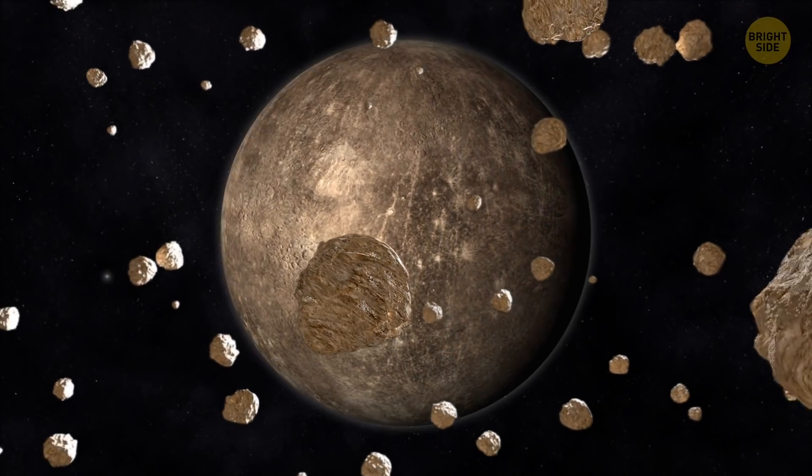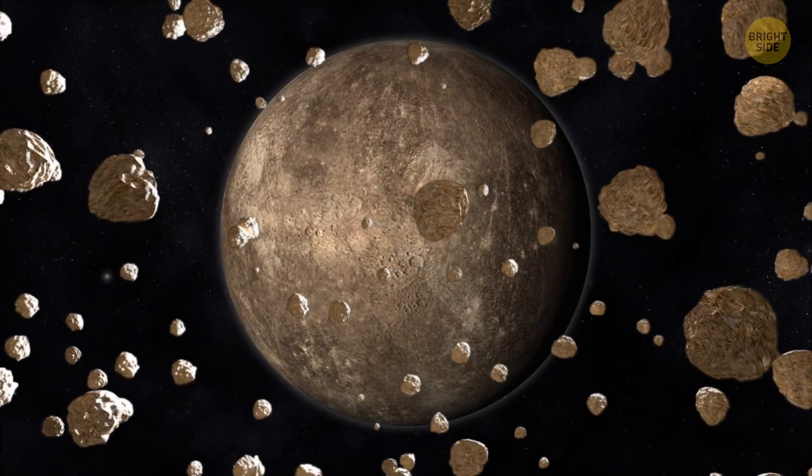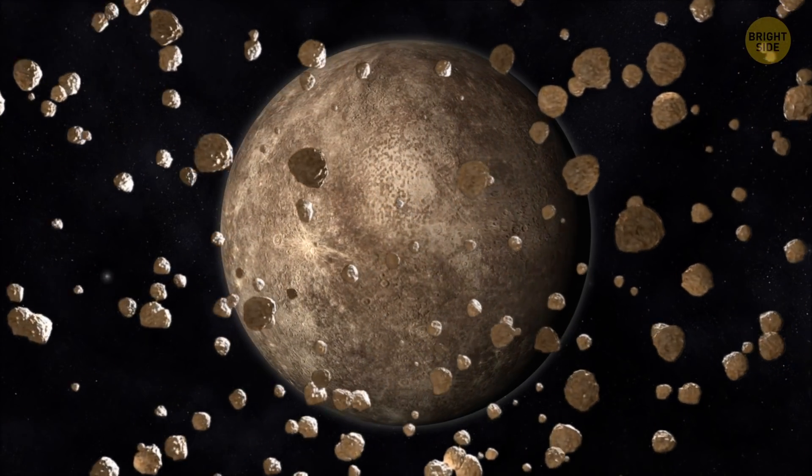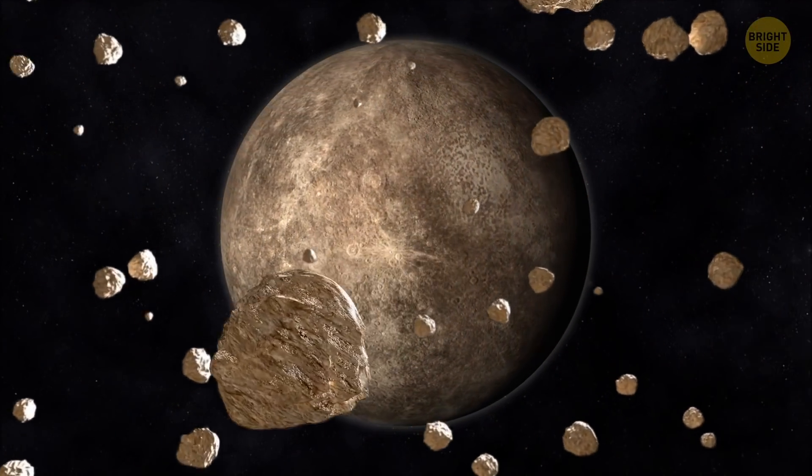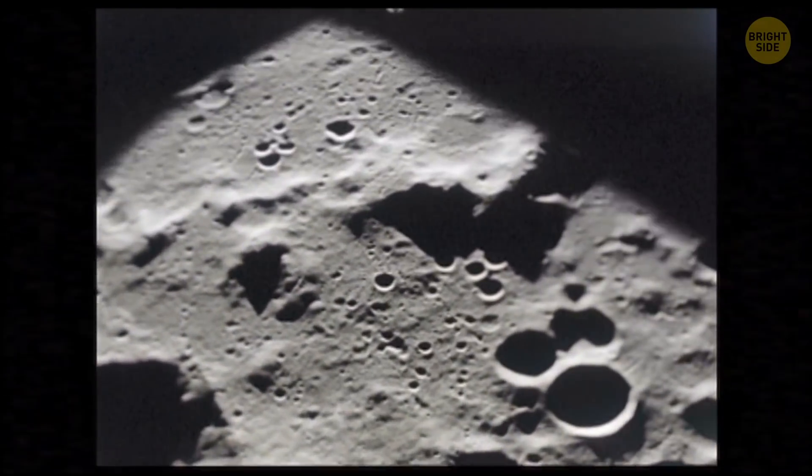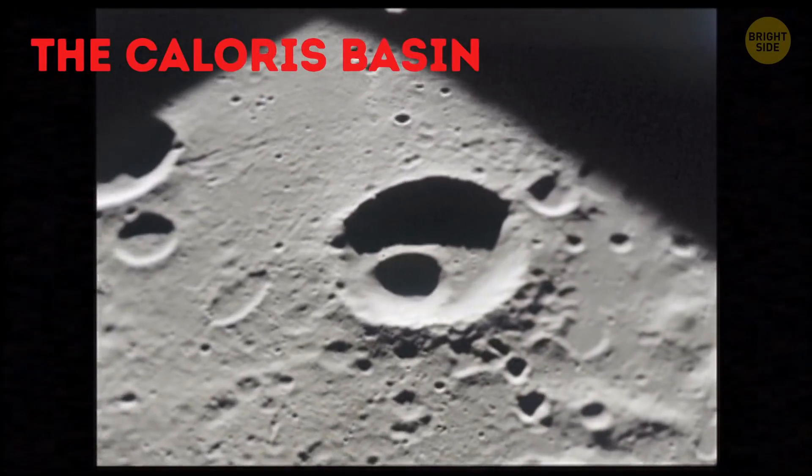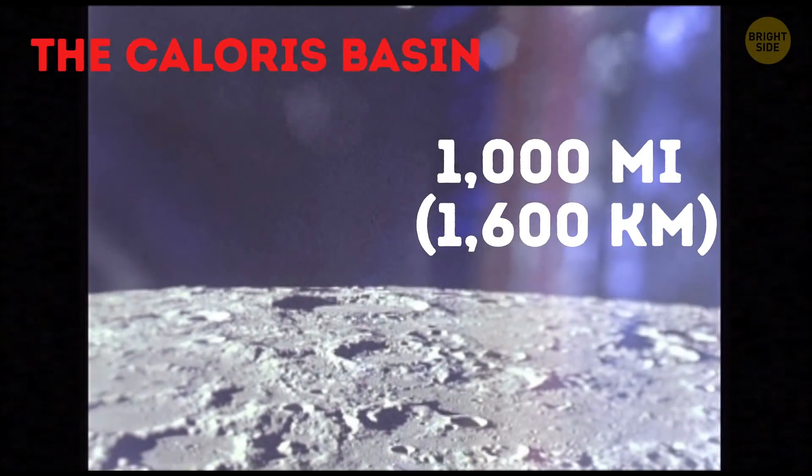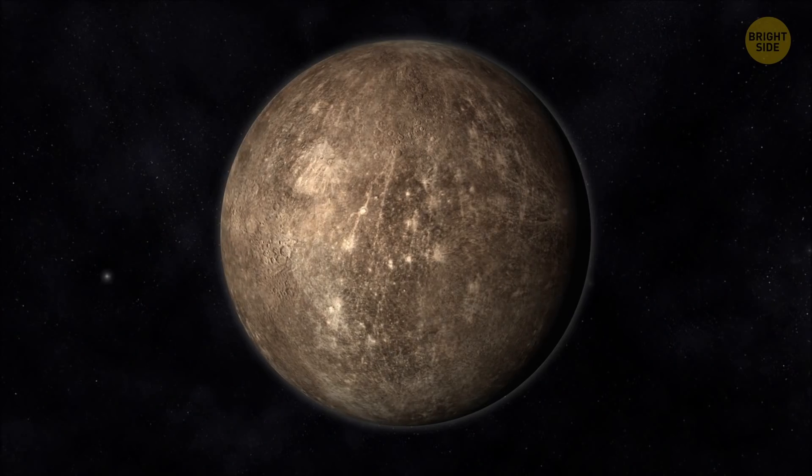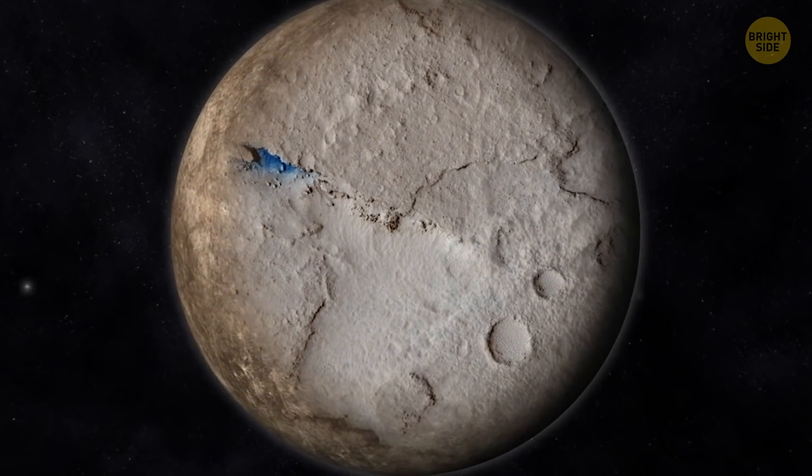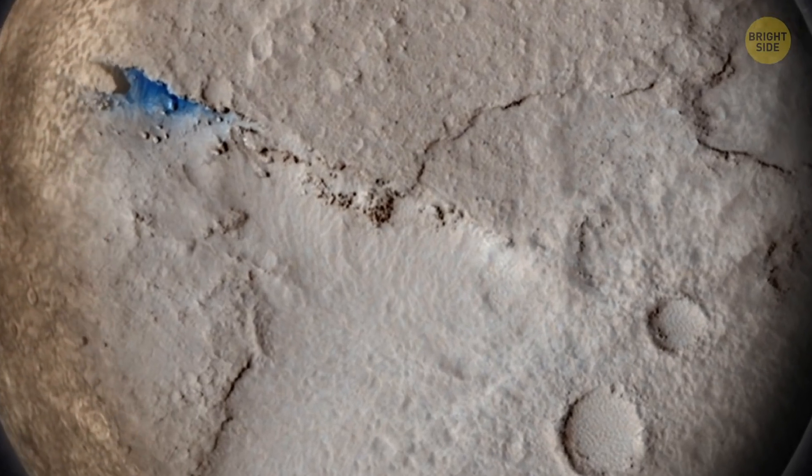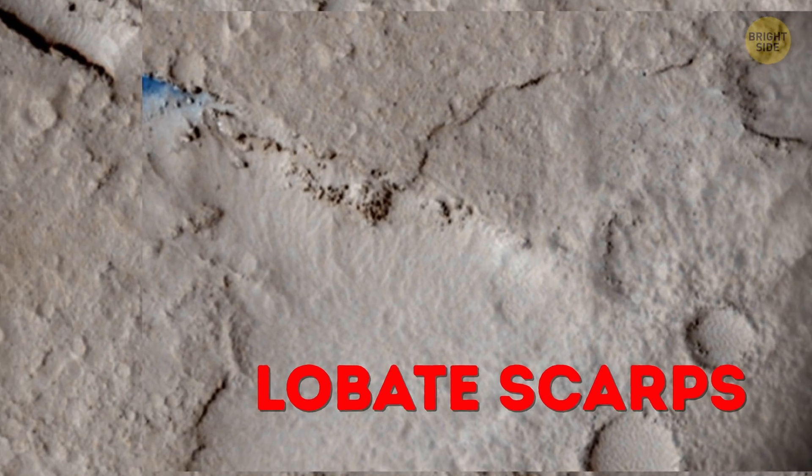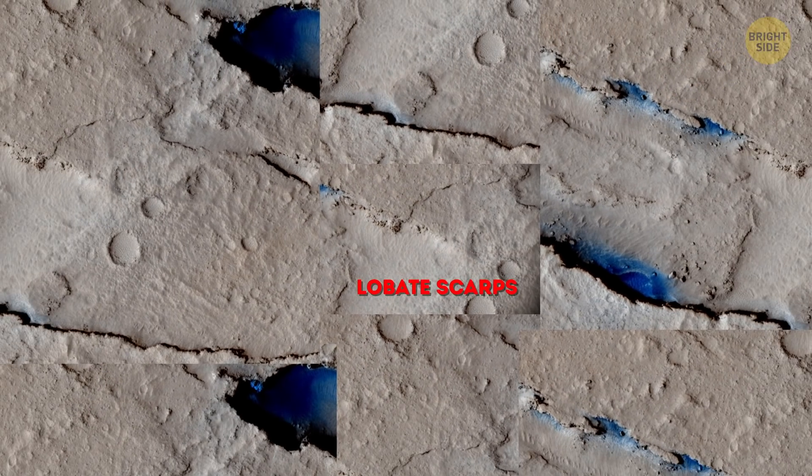But other than that, Mercury is an impressive place to be. It's the most cratered planet of the solar system, the result of countless clashes with comets and asteroids. And the largest impact crater on the planet, called the Caloris Basin, is almost 1,000 miles across. It's great for sightseeing. Mercury also has wrinkles that appeared when its iron ore was cooling and contracting. These wrinkles are called lobate scarps, and most of them are hundreds of miles long and almost a mile high.